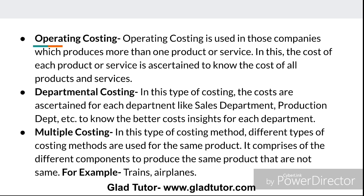For example, a company producing shampoo, soap, and oil can calculate the cost of each product separately. In departmental costing, costs are ascertained for each department — like the sales department, production department — to get better cost insight for each department. So we can calculate costs for every department such as sales, production, or finance.